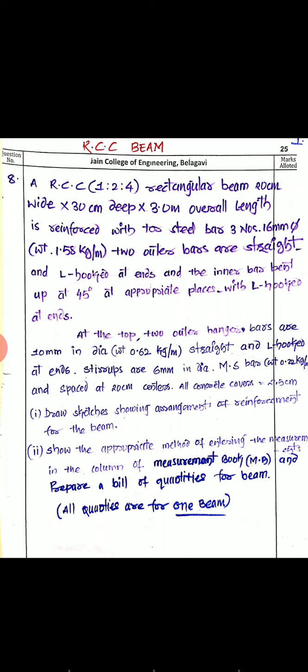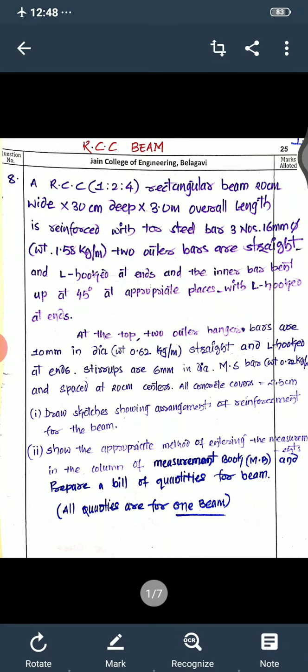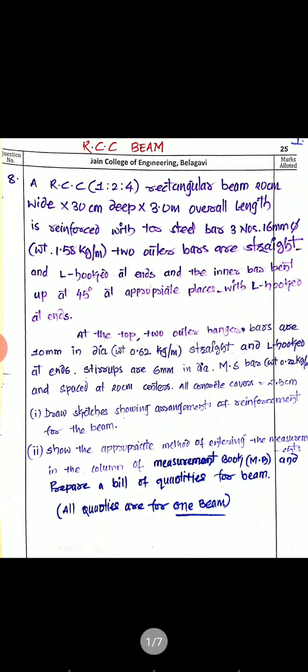We have to draw sketches showing the arrangement of reinforcement for the beam, show the appropriate method of entering measurements in the column of the measurement book, and prepare a bill of quantities for the beam — all quantities are for one beam. They have mentioned two types of steel: the main bars are tor steel and the stirrups are MS (mild steel) bars, so we have to separate the tor steel quantity and the mild steel quantity. Now I will start with the straight bars.